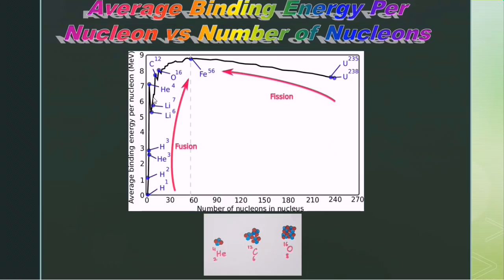Less massive nucleons up to iron participate in fusion reactions, whereas nucleons more massive than iron participate in fission reactions. As we can see from this graph, both fission and fusion processes tend to increase the binding energy per nucleon of the particles involved.